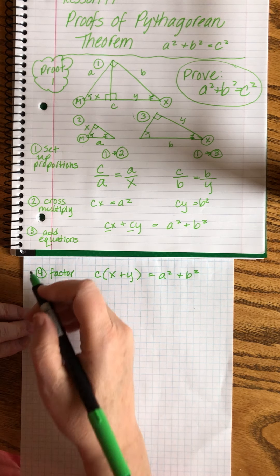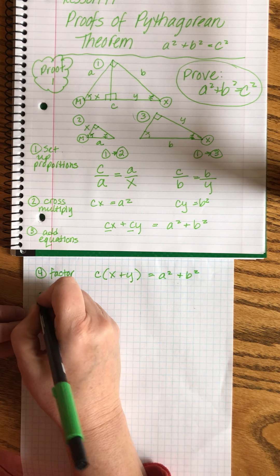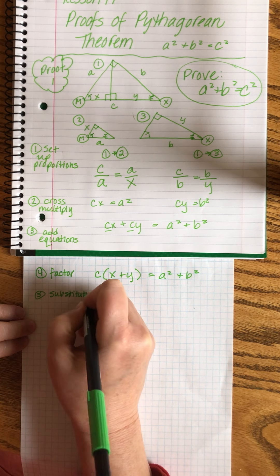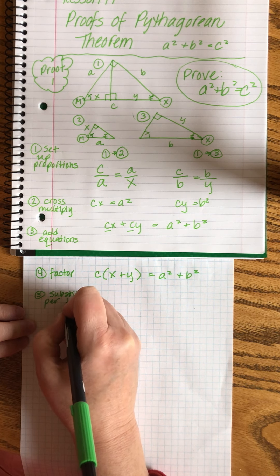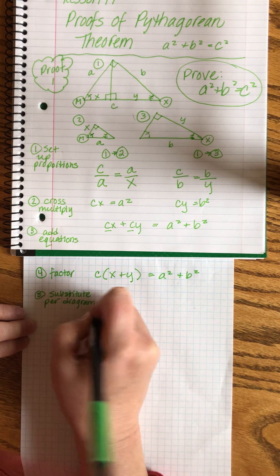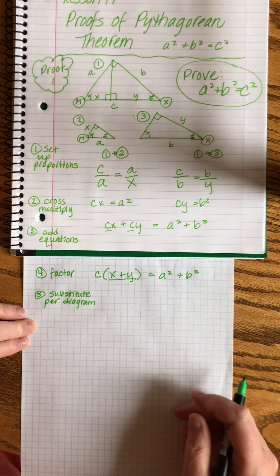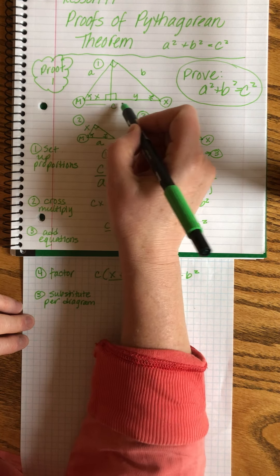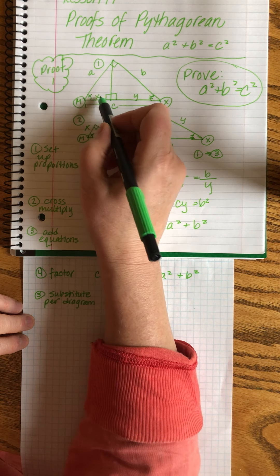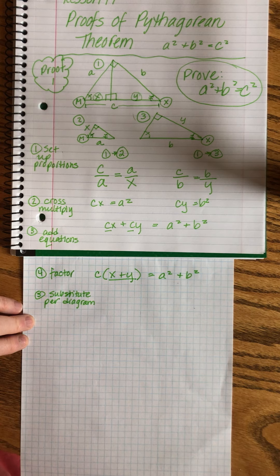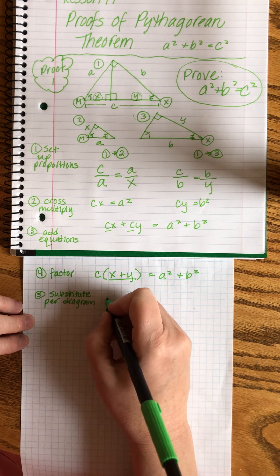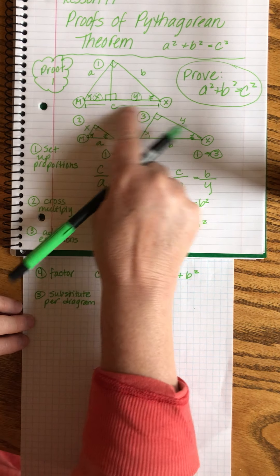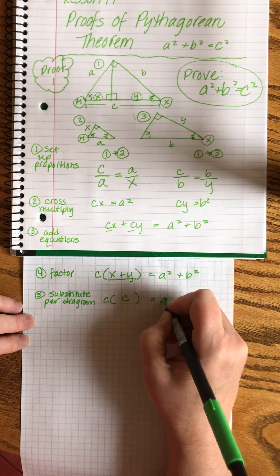Now I'm going to do a substitution according to my diagram. Do you see how that quantity is x plus y? Look at our original diagram. C, this full side, equals x plus y. So I can substitute what's in the parentheses for c. Does that make sense? Because c is equal to x plus y. Other side stays the same.